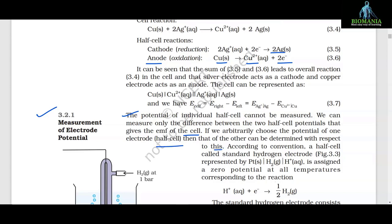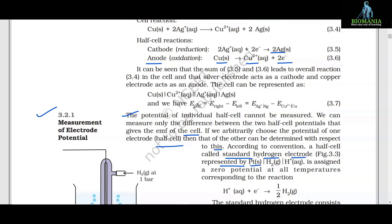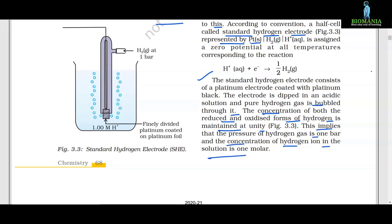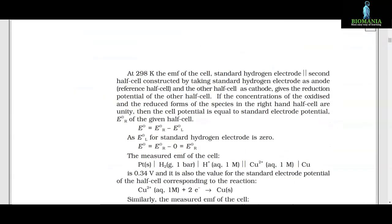According to convention, a half cell called the standard hydrogen electrode (SHE), represented as Pt|H₂|H⁺, is assigned a zero potential at all temperatures. The standard hydrogen electrode consists of a platinum electrode coated with platinum black, dipped in an acidic solution through which pure hydrogen gas is bubbled. The concentration of both the reduced and oxidized forms of hydrogen is maintained at unity — meaning hydrogen gas pressure is 1 bar and concentration of hydrogen ions is 1 molar.